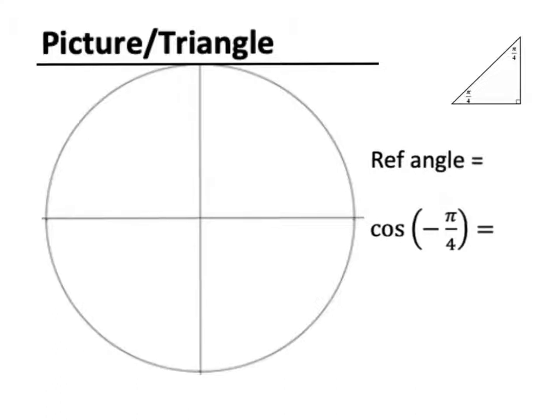And we have a negative here, which means we're rotating. Instead of rotating the normal way, like this way, nope, we are rotating the other way. We're rotating pi over 4.